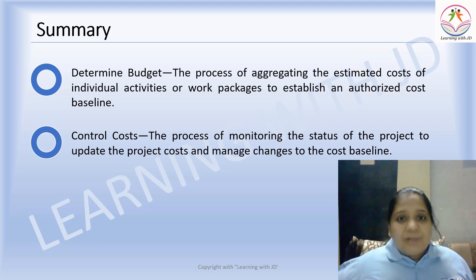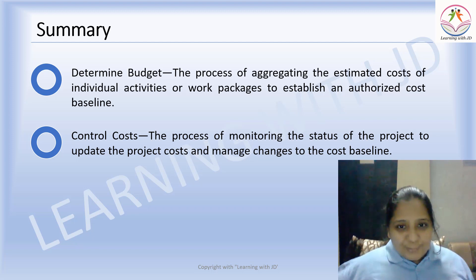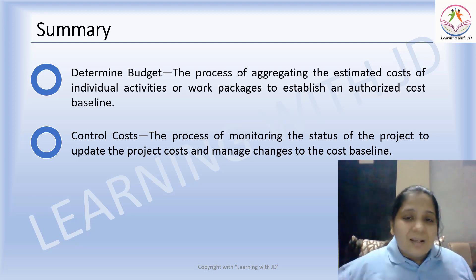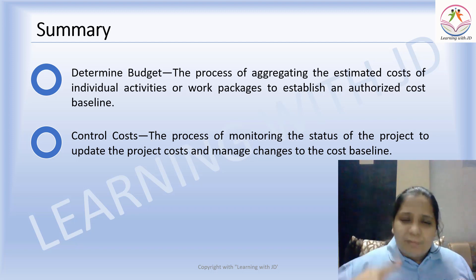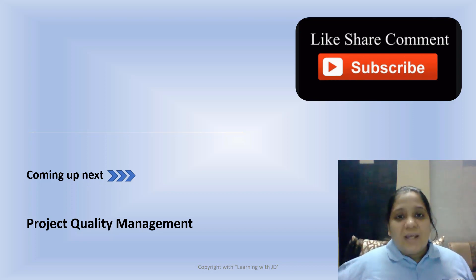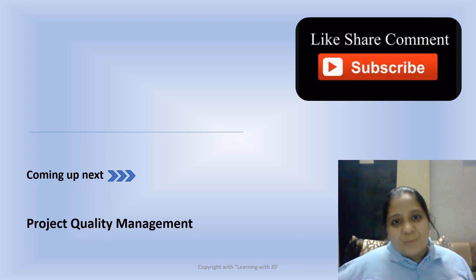To summarize today's video: we covered how to determine your budget at an overall project level, and how to control your cost. EVM is one of the most important topics in control cost — you will get around six to eight marks in your examination. Read it well, remember all the formulas. If you have any queries, write to me. Like, share, and comment on the videos, and subscribe to the channel. See you soon with more videos!